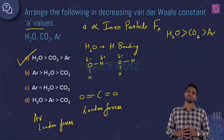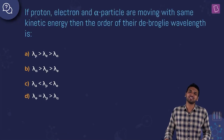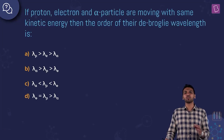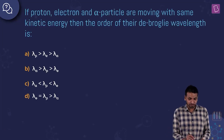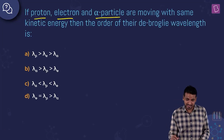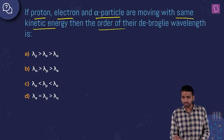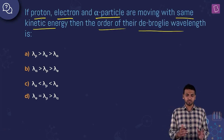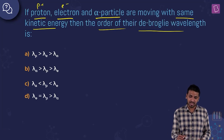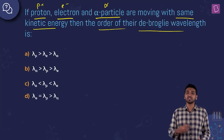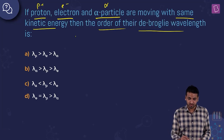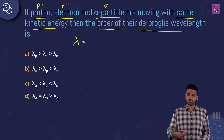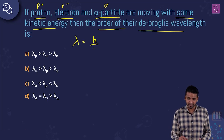Here we have a question on De Broglie's wavelength. If a proton, electron, and alpha particle are moving with the same kinetic energy, find the order of their De Broglie's wavelengths. We have to compare their wavelengths. Lambda, the De Broglie wavelength, has the formula λ = h/p, where p is momentum, equal to mass times velocity.